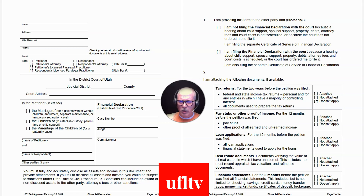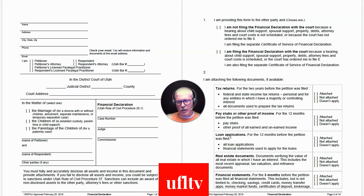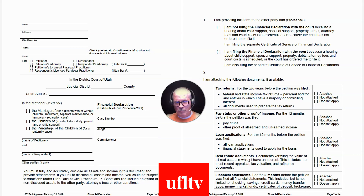For most people, tax returns will always apply, but if you have no income and are exempt from filing taxes, you can check that box. If you're self-employed and don't have pay stubs, you'll need to produce bank statements and other business records showing what you're paid and how much. For real estate, even if you only lease or rent property you must provide a copy of your lease. If you own property, provide a copy of your title, mortgage papers, and tax documents showing assessed values. If your spouse has documents and won't give you access, mark them 'not attached' and explain on the next page.